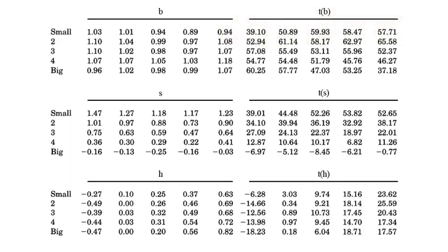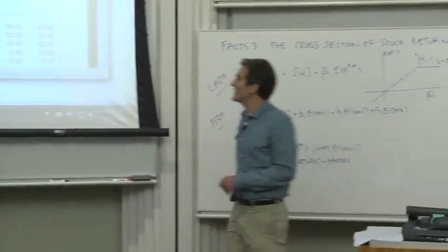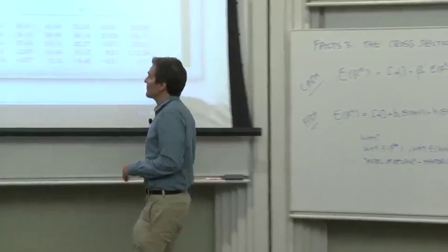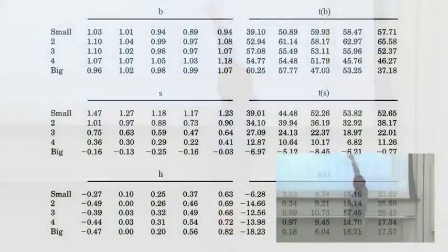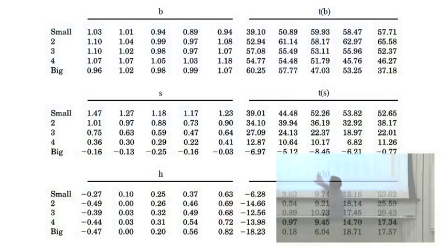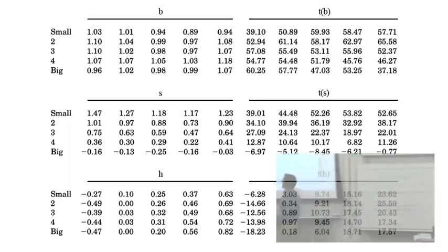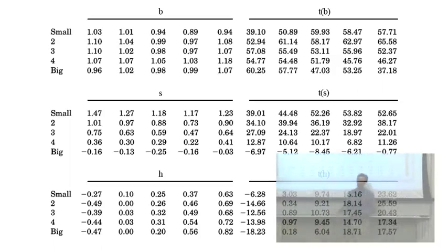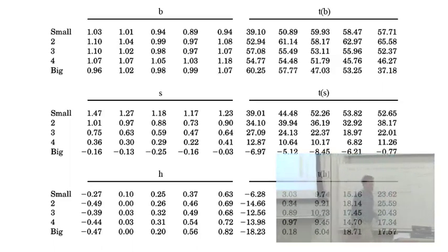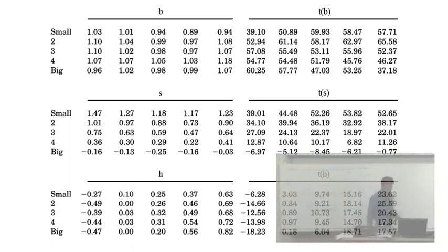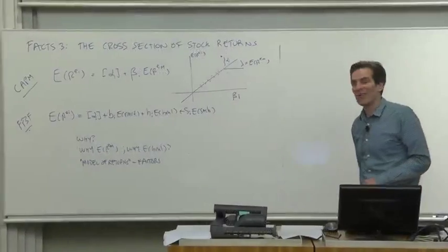And the salient fact from this table is that if we look at these B, S, and H coefficients, the S coefficients rise in that direction. The H coefficients rise in the other direction. Therefore, say Fama and French, we explain the large expected returns. High expected returns correspond to those high Bs and Hs. That's a deep fact for us to meditate on.